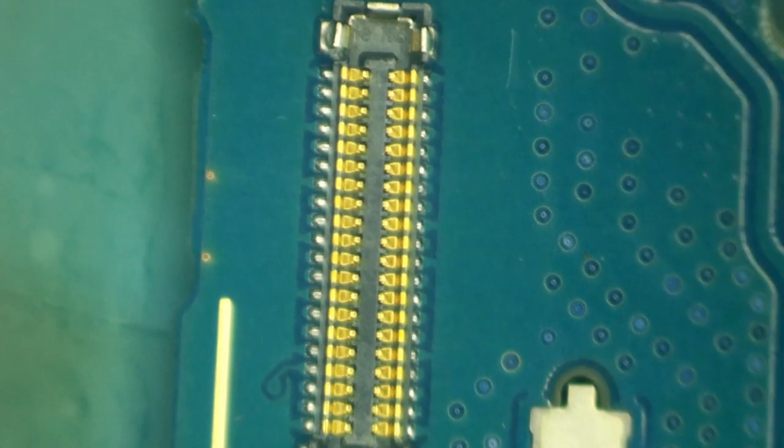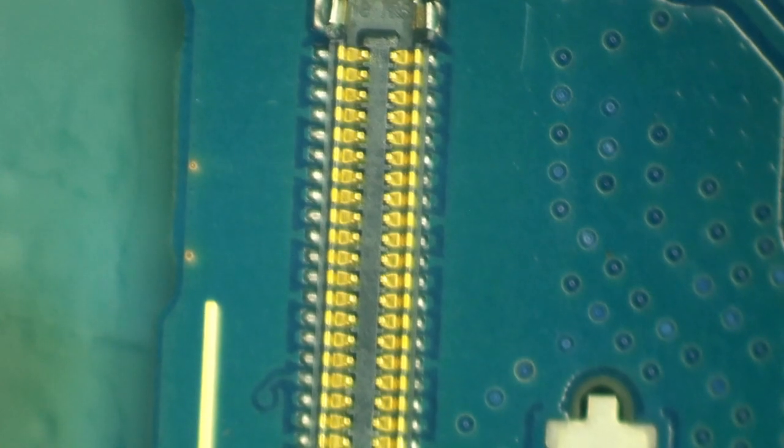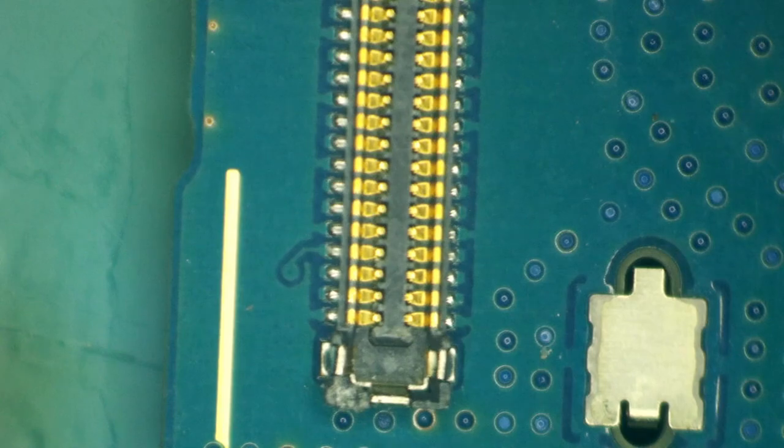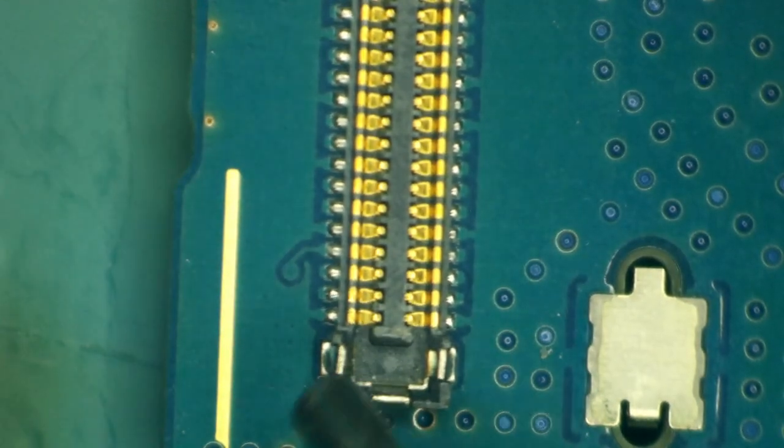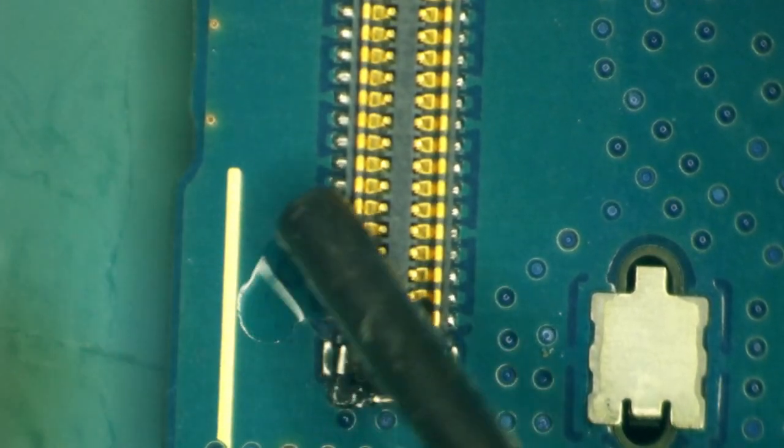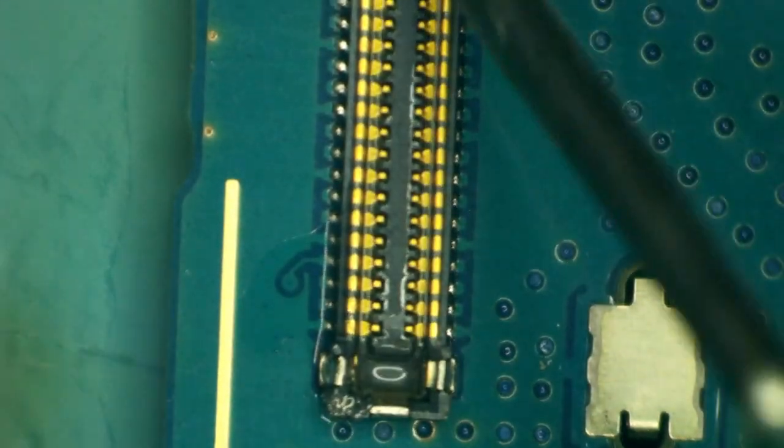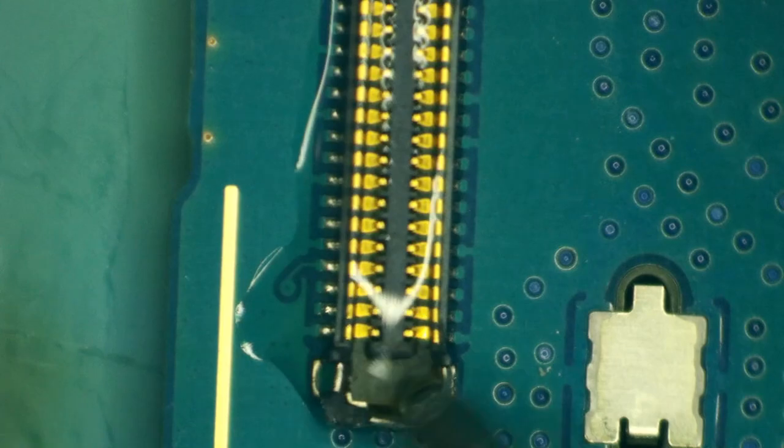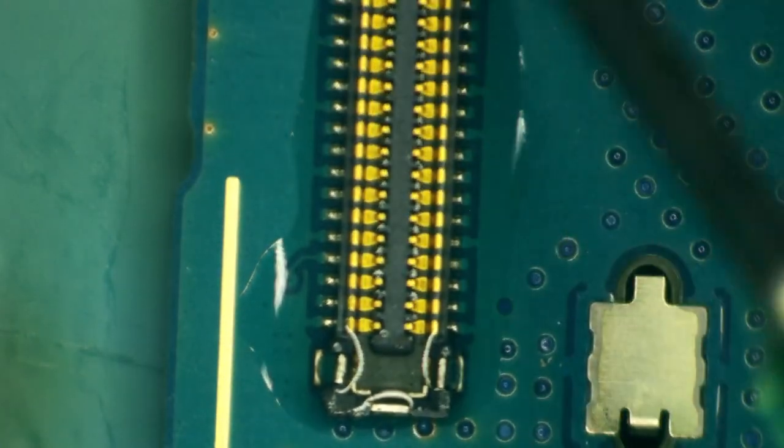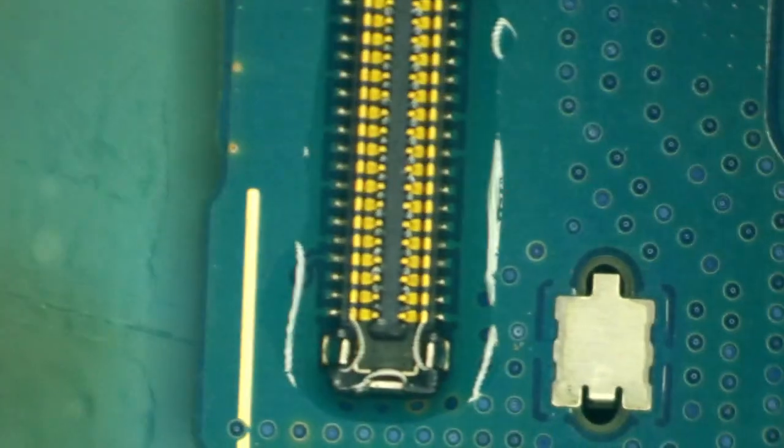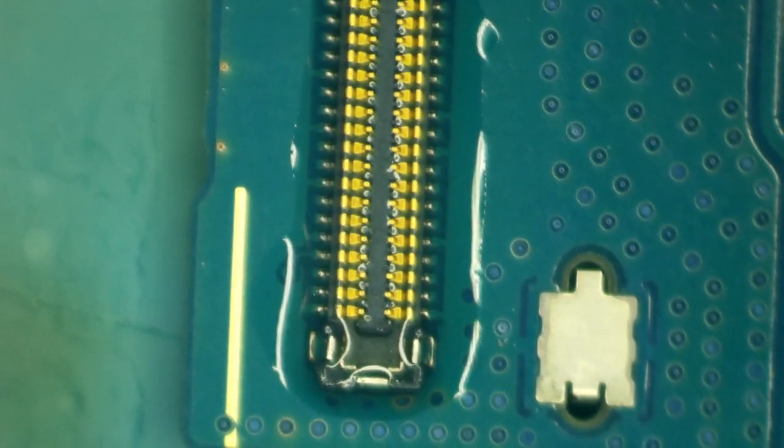Let's go ahead and grab our donor component. To keep from melting this component I'm going to use an abundance of flux. Flux is going to help us with a clean removal and it also provides some thermal shielding from my hot air. I'm just going to cover the whole entire thing in flux like that. Alright here we go.